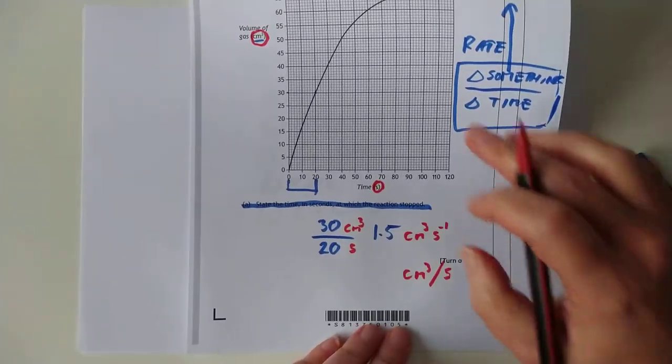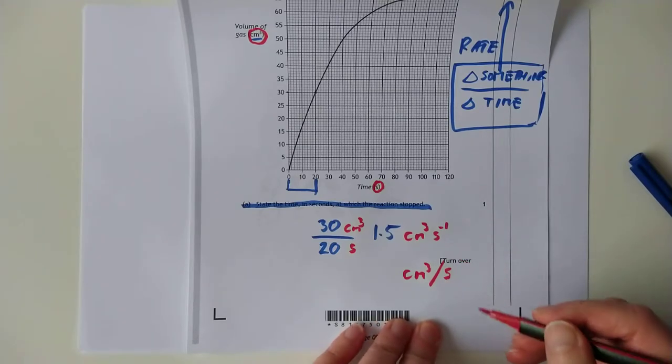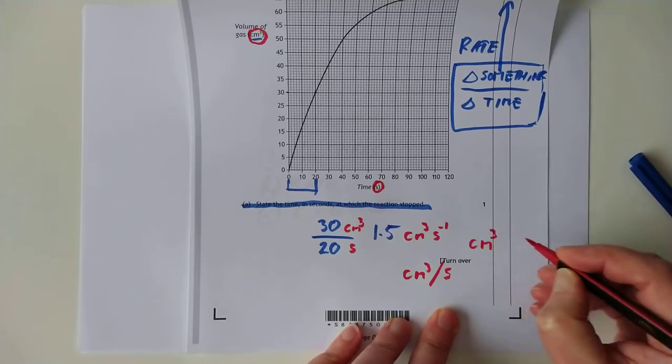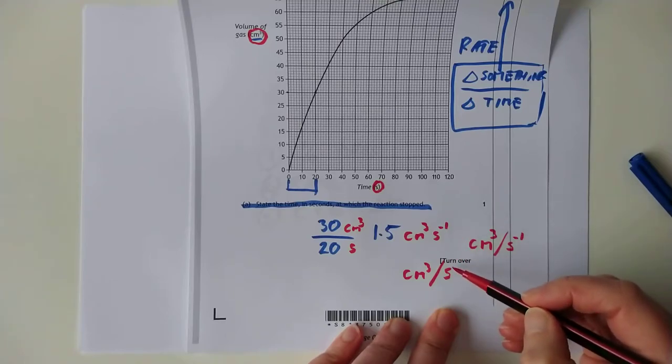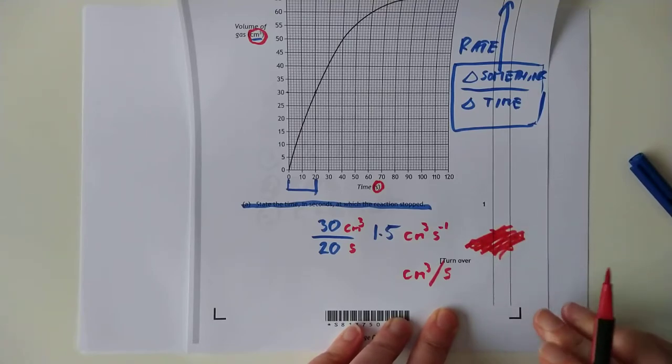Sorry, I was off the page there. Getting sloppy again. Important to note that these two are the same thing mathematically. This, however, I'm about to show you is wrong. cm cubed slash seconds to the minus one. You can't combine the two. It's an either or situation, not a both. So let's pay no attention to that.